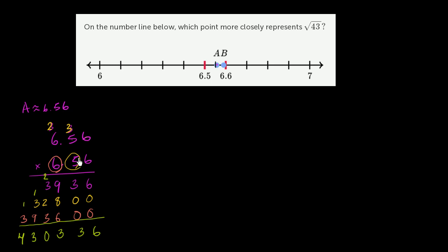You have 1, 2, 3, 4 numbers behind the decimal. So this gets us to 43.0336. So this is pretty close to 43. Without even thinking about what b squared is, I'm already predisposed to saying that a is going to be closer. But let's just try.